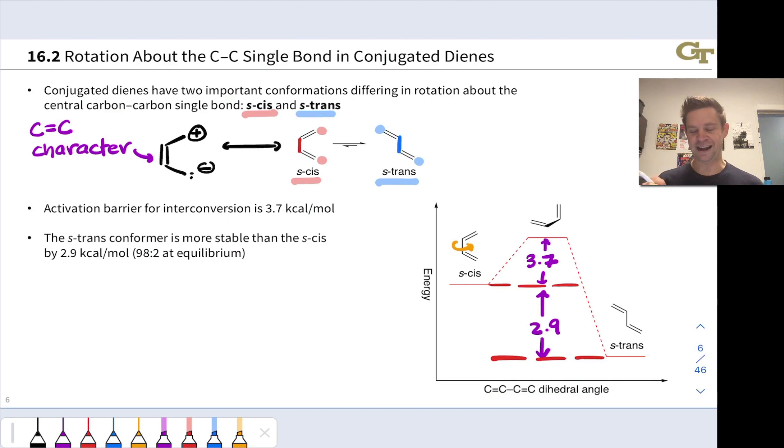The thing to notice now is that the 3.7 kilocalories per mole is actually a familiar value. This is equal to the energy of stabilization associated with conjugation that we got from the heats of hydrogenation experiment that we've seen previously. And that's not a coincidence.